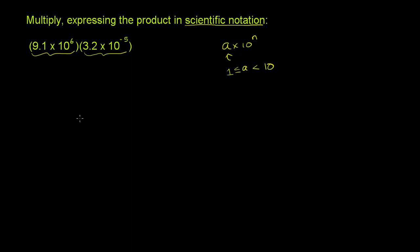So let's see how we can multiply this. So this over here is the exact same thing. This is the exact same thing as 9.1 times 10 to the sixth times 3.2 times, actually I don't have to write an x. Let me write it all with a dot notation to make it a little bit more straightforward.